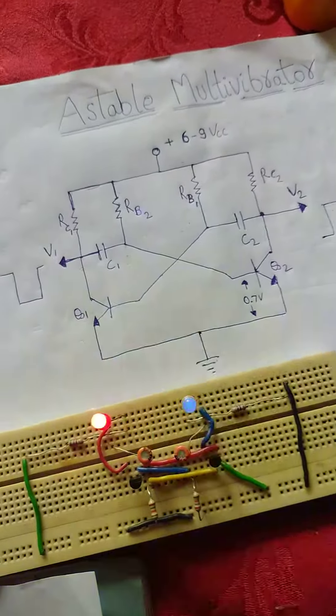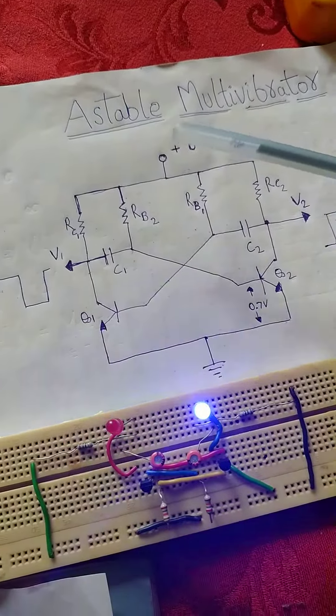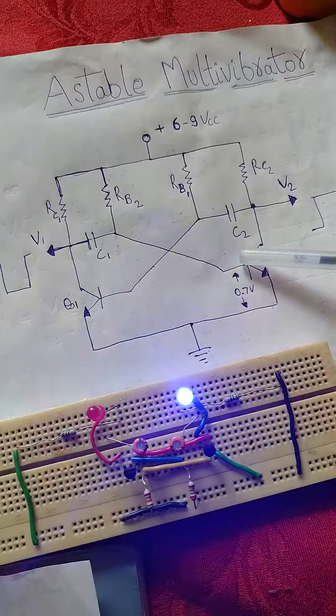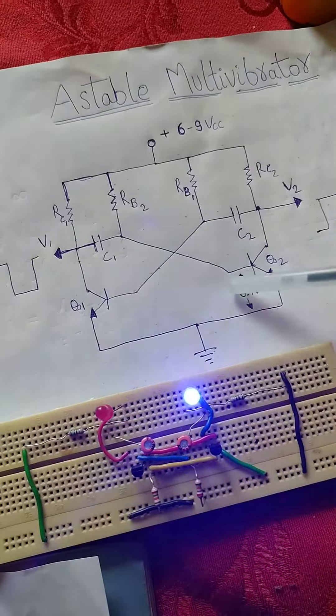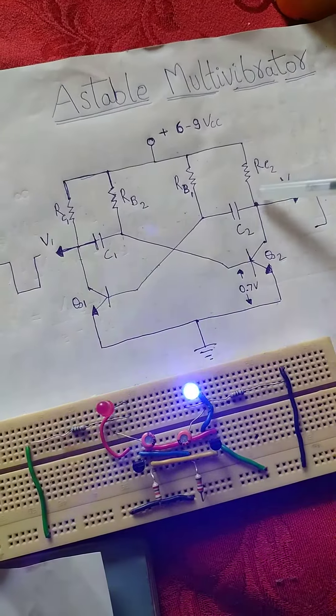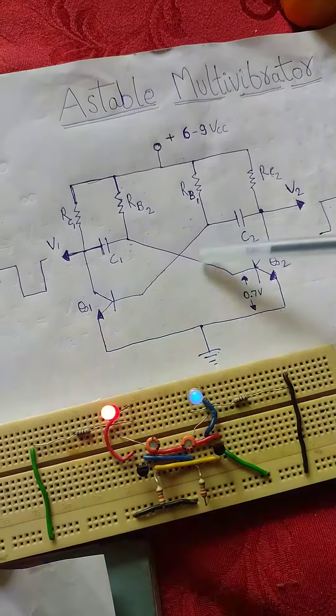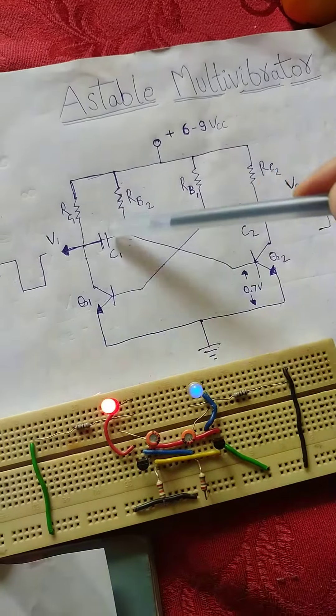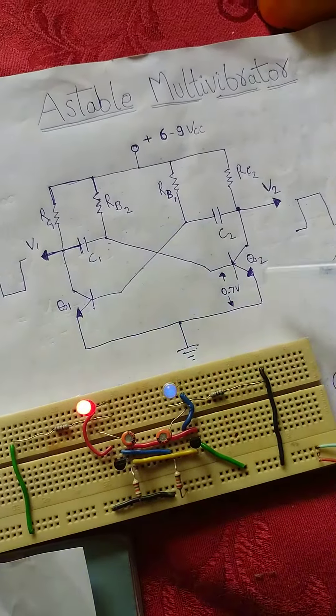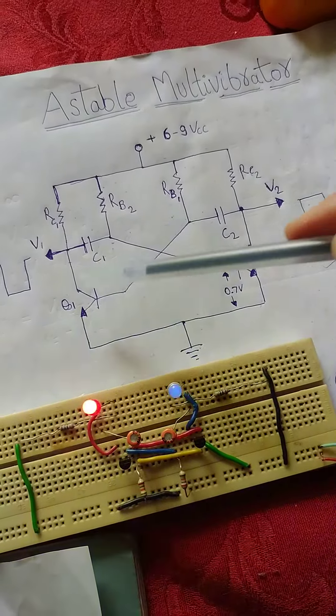Now this is an astable multivibrator circuit which consists of two transistors whose collectors are connected to each other's base via these two capacitors. The charging and discharging of these two capacitors leads to alternate triggering of these two transistors.